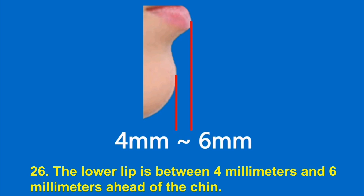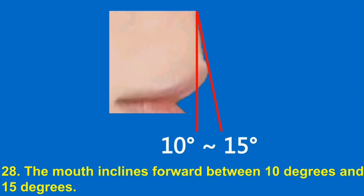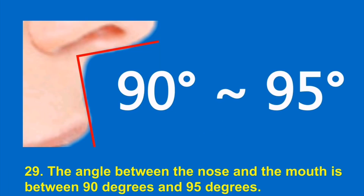26. The lower lip is between 4 millimeters and 6 millimeters ahead of the chin. 27. The upper lip is between 2 millimeters and 4 millimeters ahead of the lower lip. 28. The mouth inclines forward between 10 degrees and 15 degrees. 29. The angle between the nose and the mouth is between 90 degrees and 95 degrees.